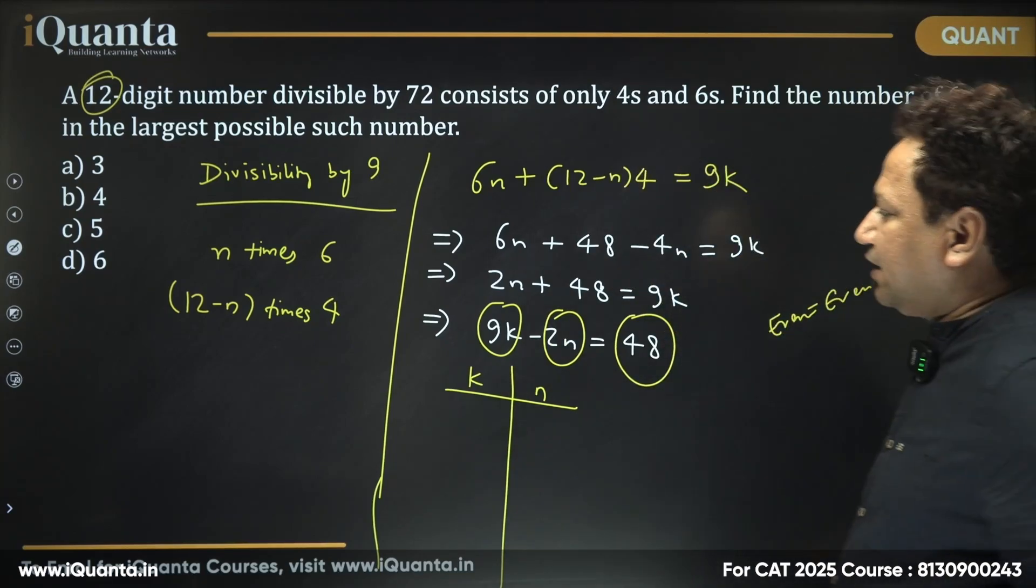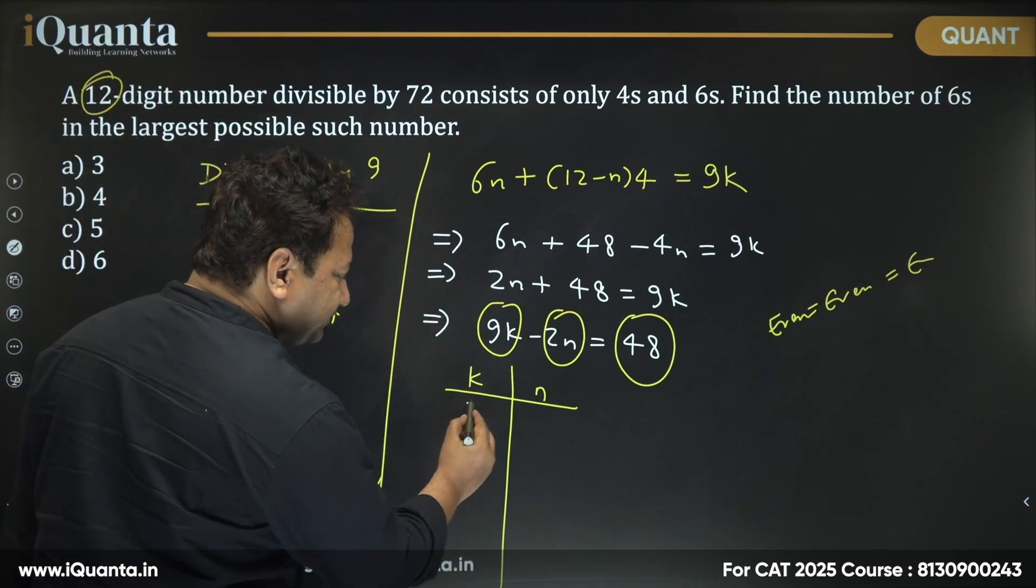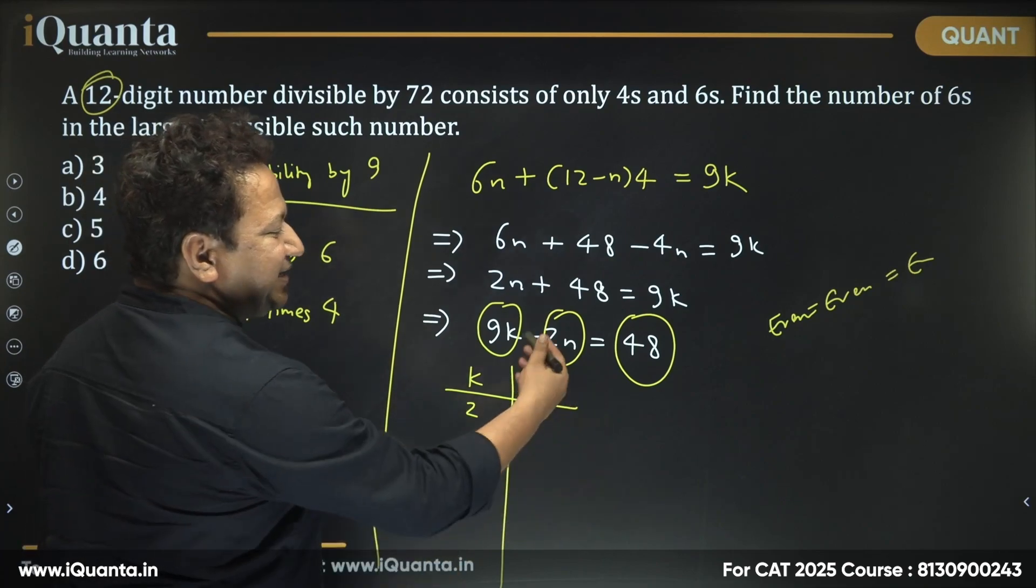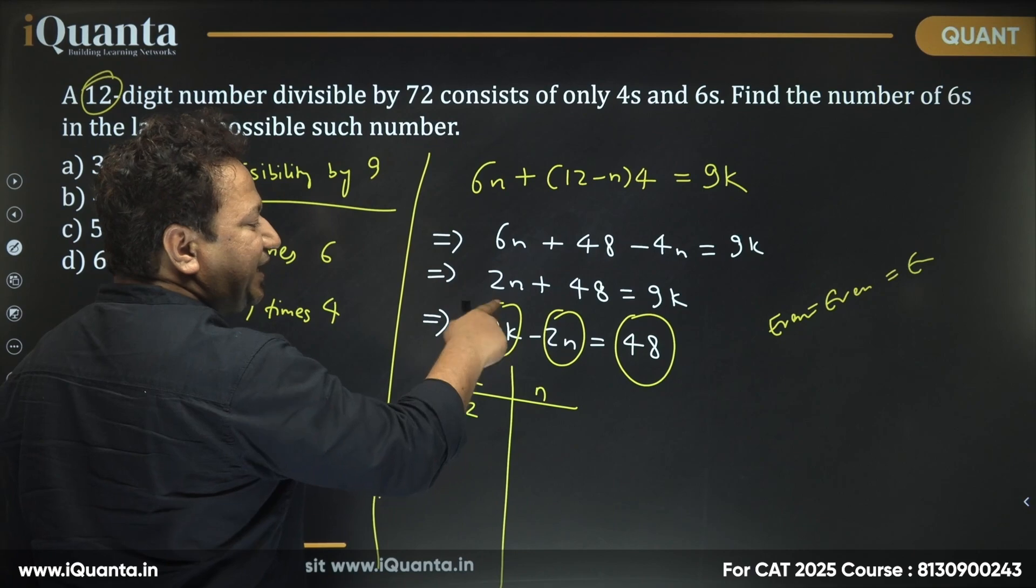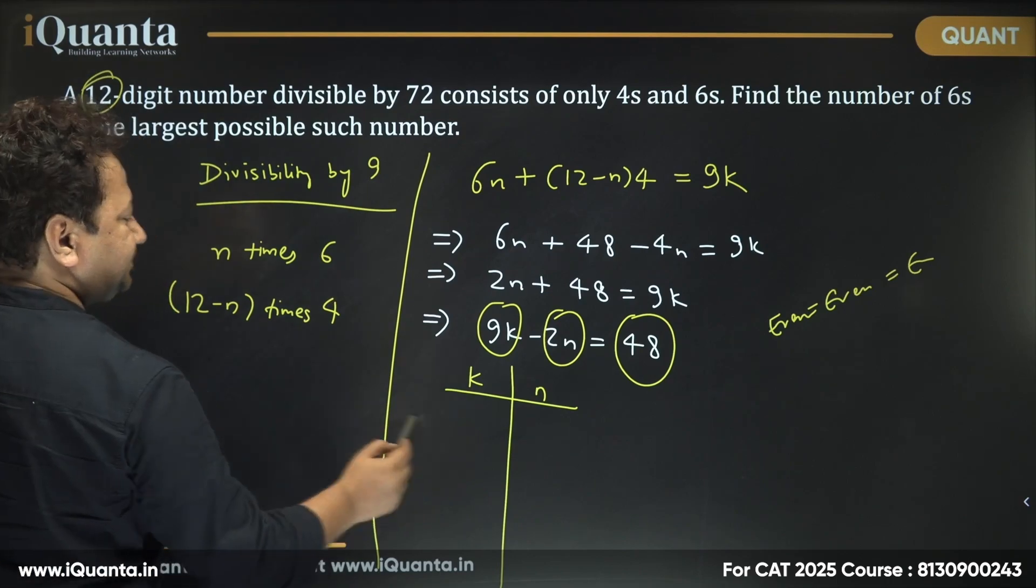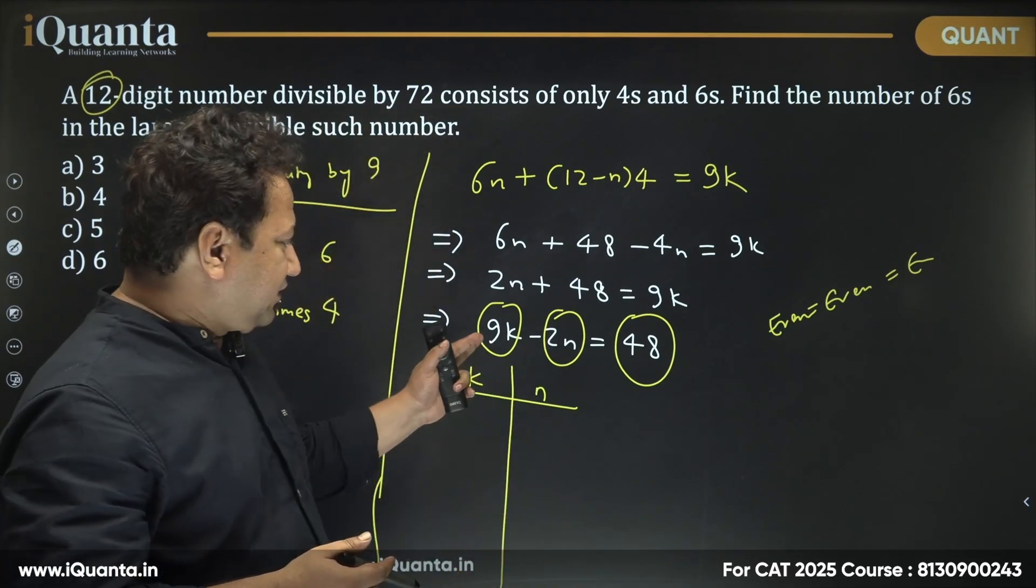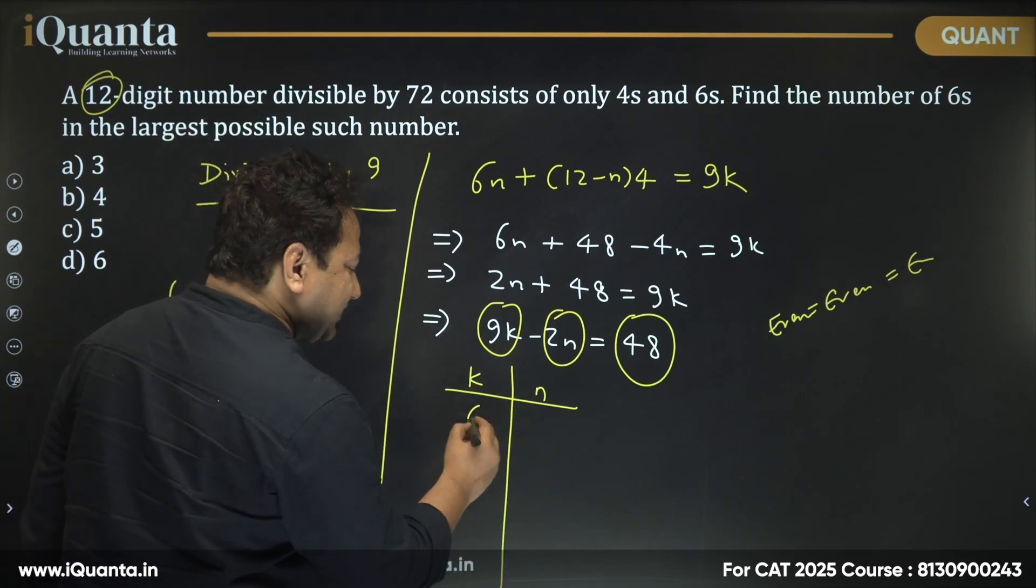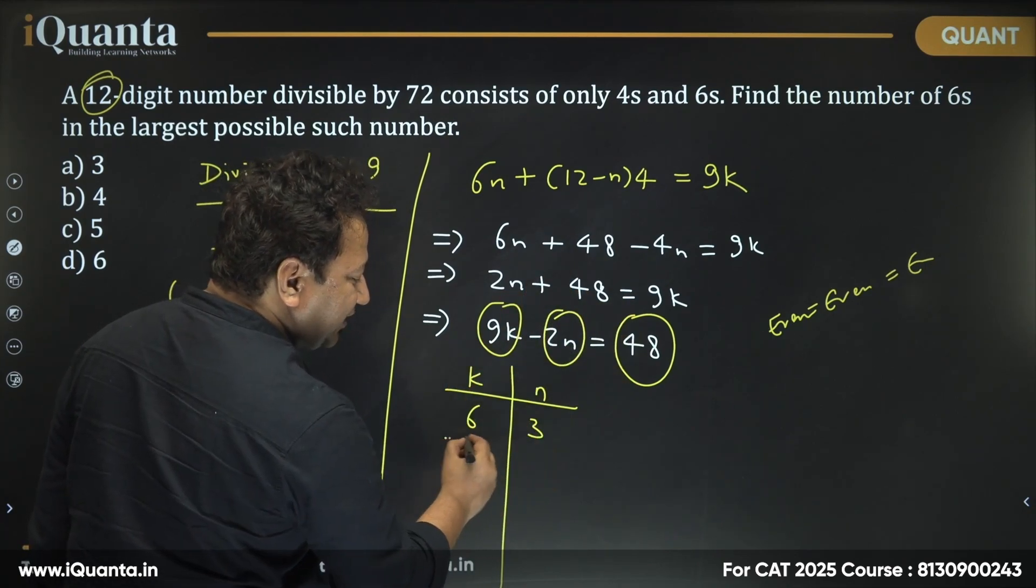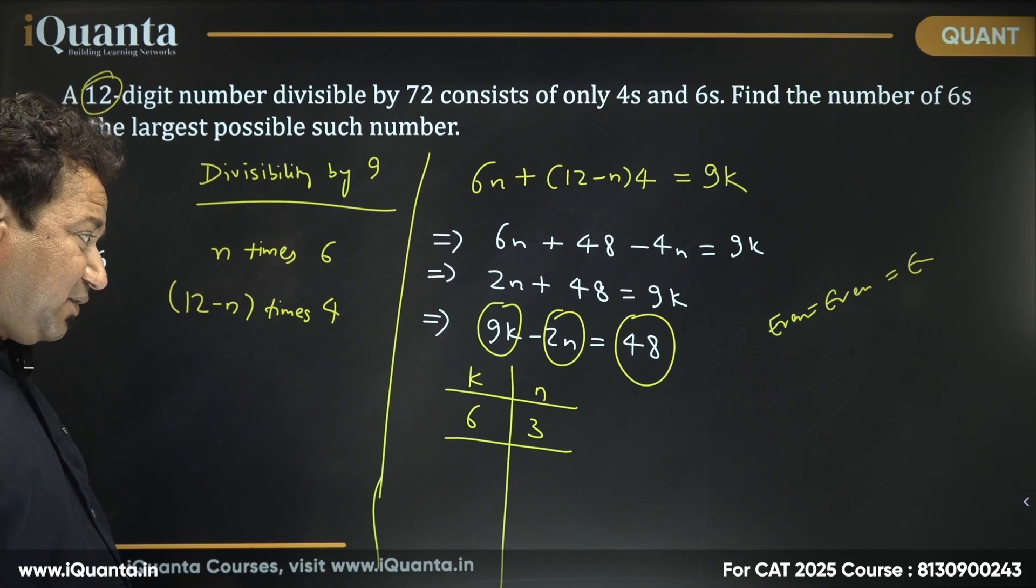So if k is an even number, starting with 2. If I put k as 2, 9 times 2 is 18. 18 minus what is 48? It's not possible, because n cannot be negative. So I need to choose the value of k in such a way that 9k is greater than 48. 9 times 5 is 45. 9 times 6 is 54. That makes sense. If I put k as 6, 9 times 6 is 54. 54 minus 6 is 48. That means n will be 3. Oh wow, I got a value. Can there be more values? Obviously there will be more values.